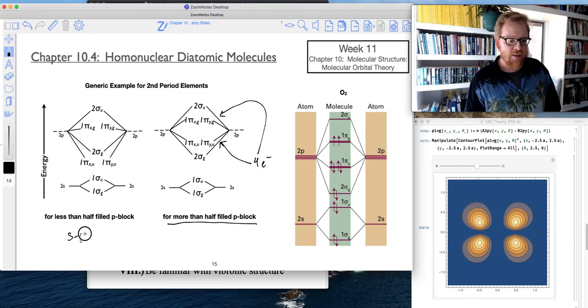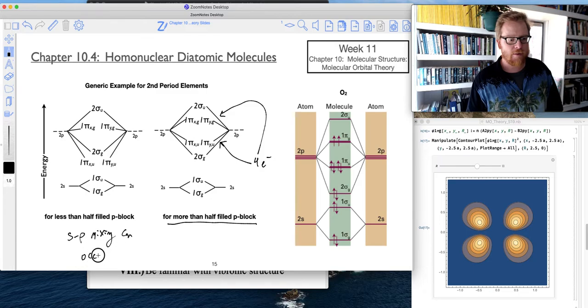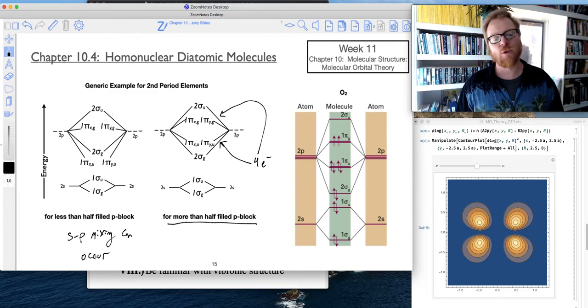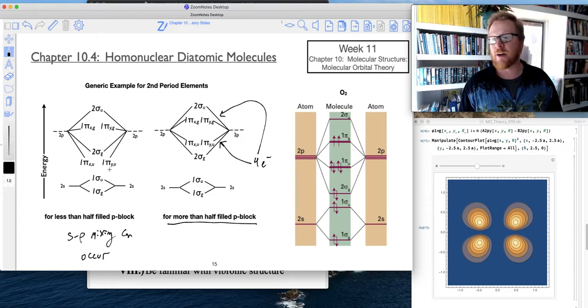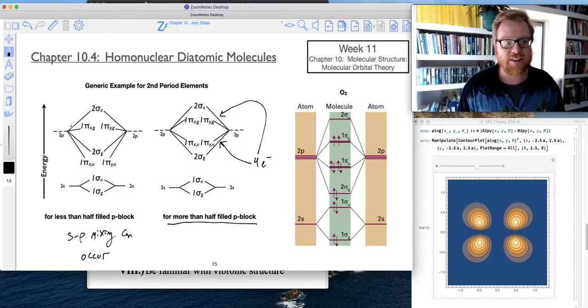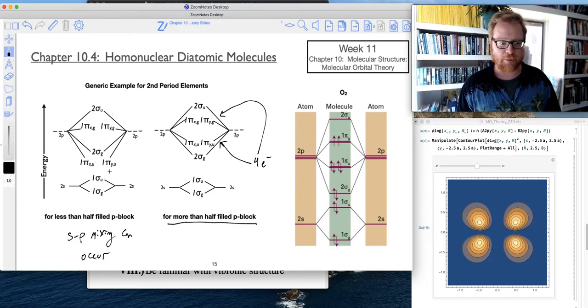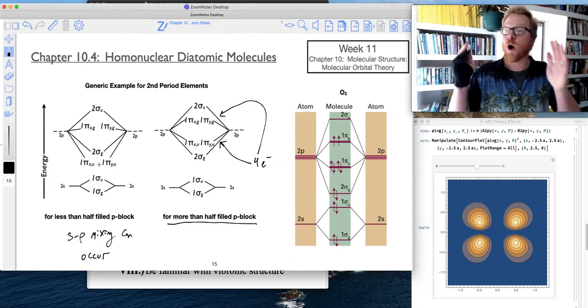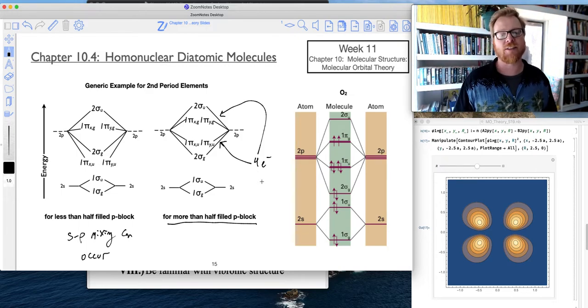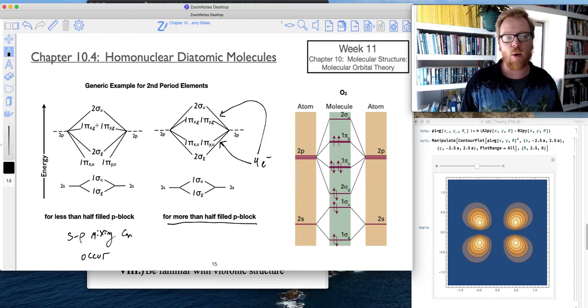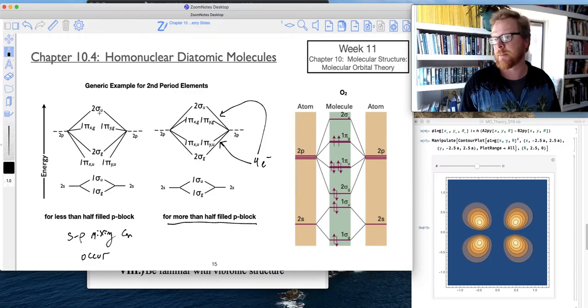So S-P mixing can occur here for less than half-filled. And so the result of that is it actually greatly reduces the energy of the pi bonds. I'm going to show you that in a moment. It's not that the 2sg energy increases, rather it's that now this S and P mixing really reduces the energy of those pi bonds because of there being less interference in that internuclear zone. And so now what ends up happening is the pi bonds get lowered way down there. So we got 1pixu and 1piyu, and then it goes 2sg, then 1pixg, 1piyg, then 2sgu.